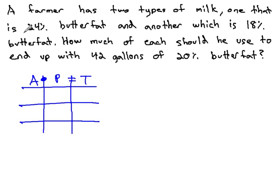We have two types of milk. One is 24% butterfat, 0.24, and the other is 18%, 0.18. We don't know the amount of each that we're using, though, so let's call them x and y.